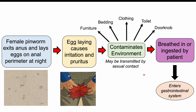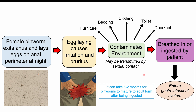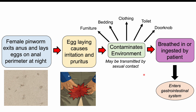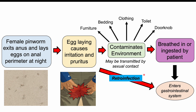The eggs enter into the gastrointestinal system, hatch, and develop into adult pinworms. Another way eggs can infect patients is through auto-infection, or retro-infection. The eggs deposited by the female pinworm on the anal perimeter can hatch — which can take weeks — and, especially with poor hygiene, enter into the anus and large intestine as a retro-infection.